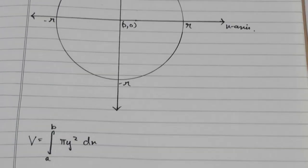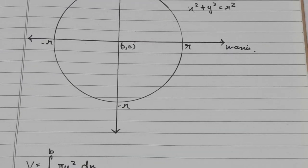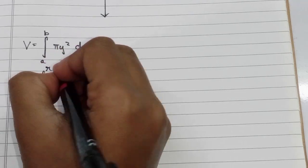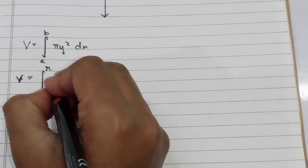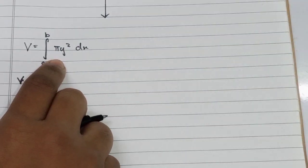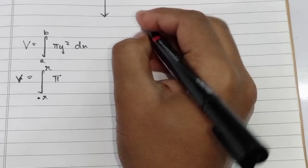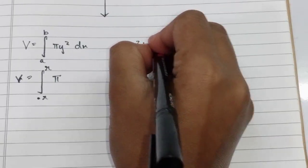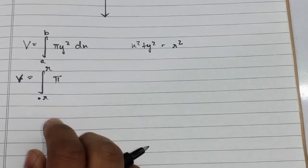The limits will be r and negative r, so this is the integral from −r to r of π times y². We know that x² + y² = r².